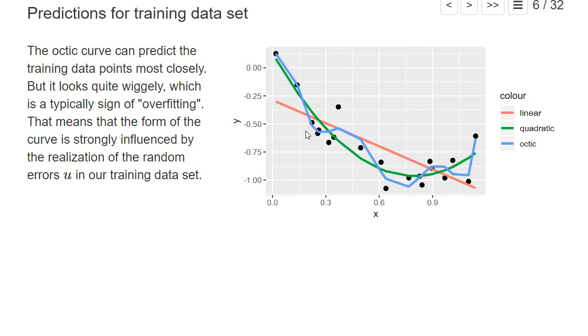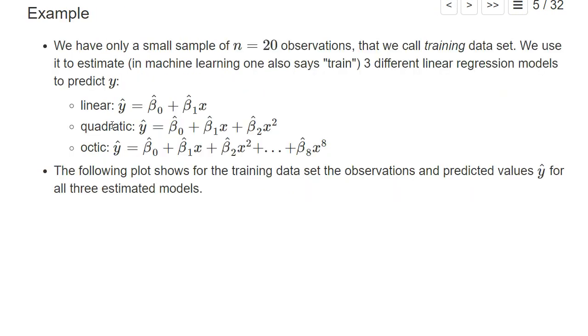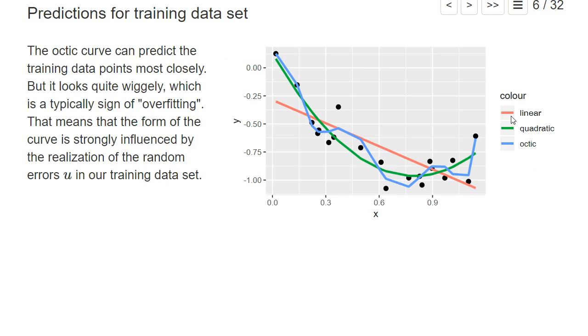Okay, here are the results. The black dots are the true values from our simulated dataset, and the three curves show our estimated regressions: the linear, the quadratic, and the optic specification.